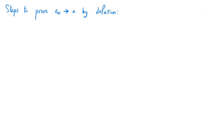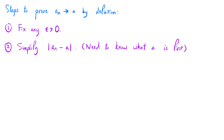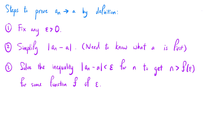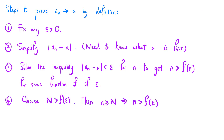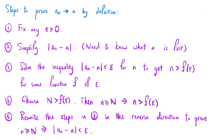In general, we can use the following steps to prove that a sequence an converges to a limit a by definition. First, fix any epsilon greater than 0. Second, simplify the expression, the absolute value of an minus a, assuming we know the limit a. Third, solve the inequality, the absolute value of an minus a is less than epsilon, for n, to get that n is greater than some function f of epsilon. Fourth, choose capital N greater than f of epsilon; then little n greater than or equal to N implies little n is greater than f of epsilon. Fifth, rewrite the steps from step three in the reverse direction to prove that n greater than or equal to N implies the absolute value of an minus a is less than epsilon.